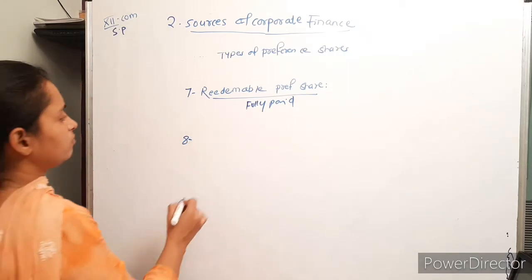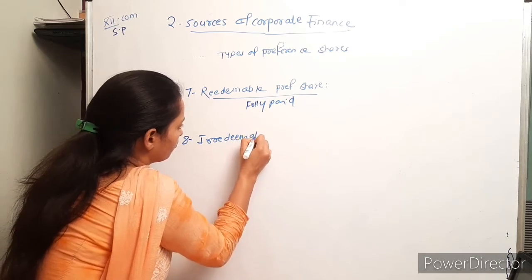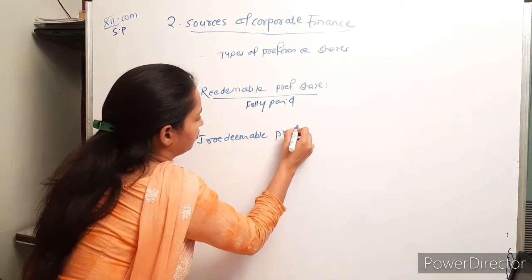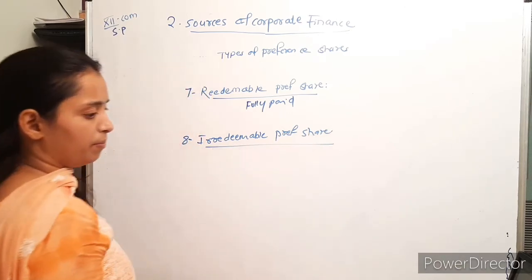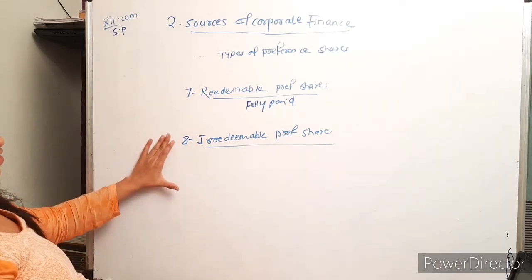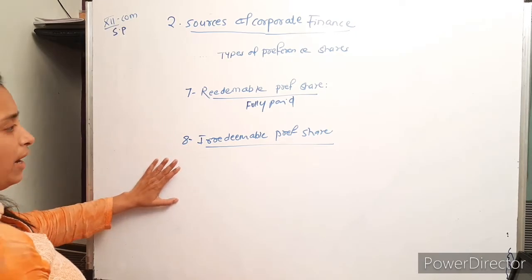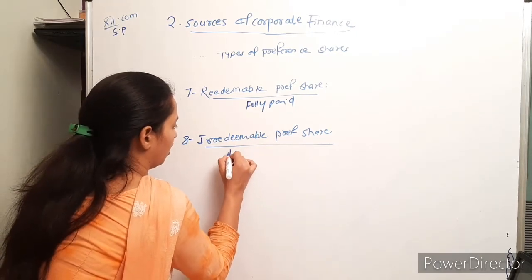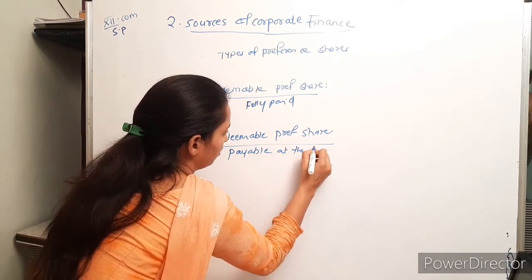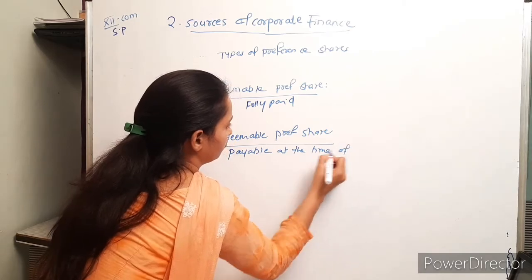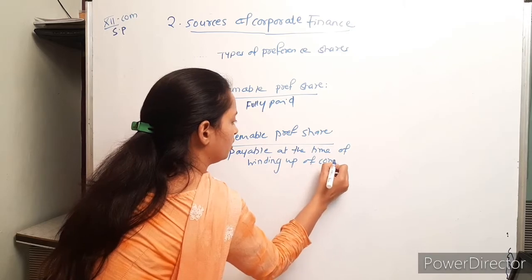On the other hand, irredeemable preference shares are not repaid during the lifetime of the company. These shares are payable only at the time of winding up of the company.